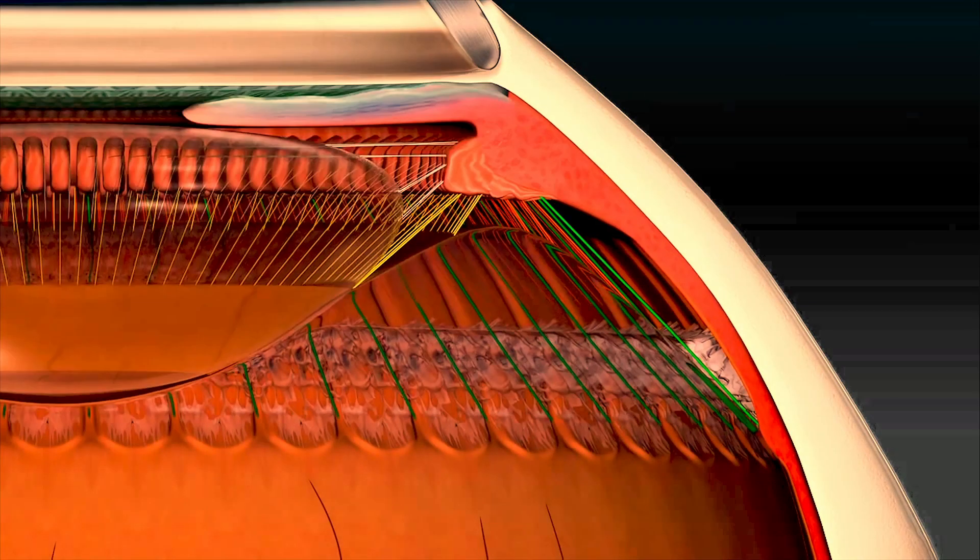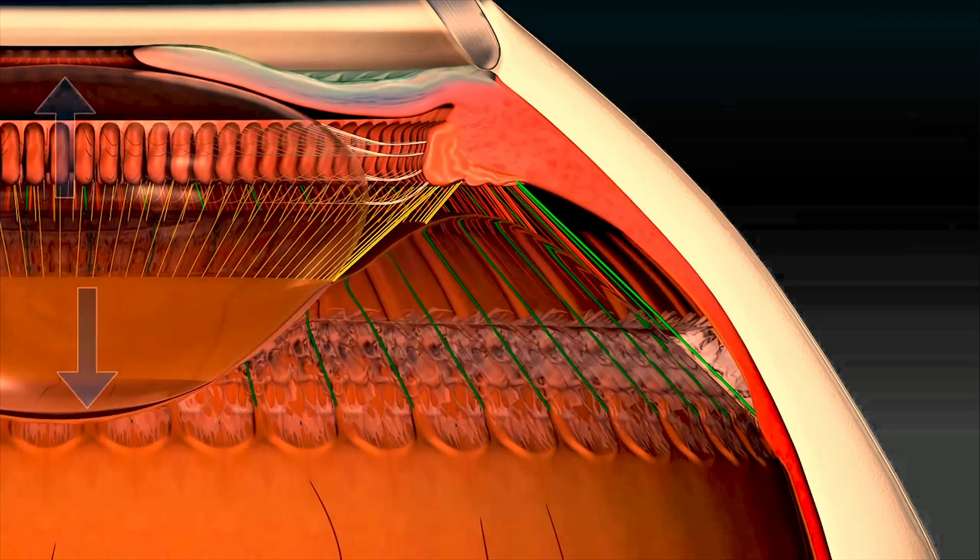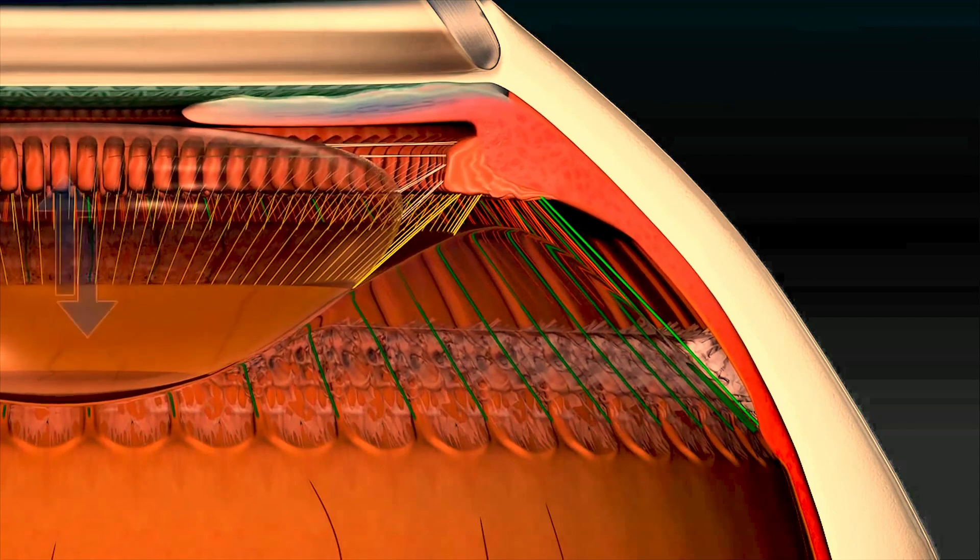To focus near objects, the lens becomes thicker. To focus far objects, the lens becomes thinner.